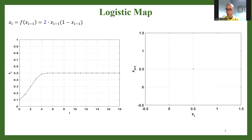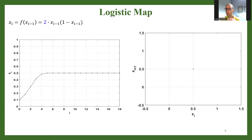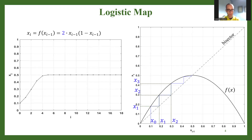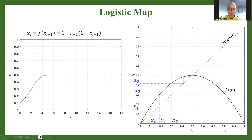So what is the difference? The cobweb diagram depicts the trajectory of the system, not with respect to the iterations, but with respect to consecutive values. So these are the two axes: xi-1 and xi.